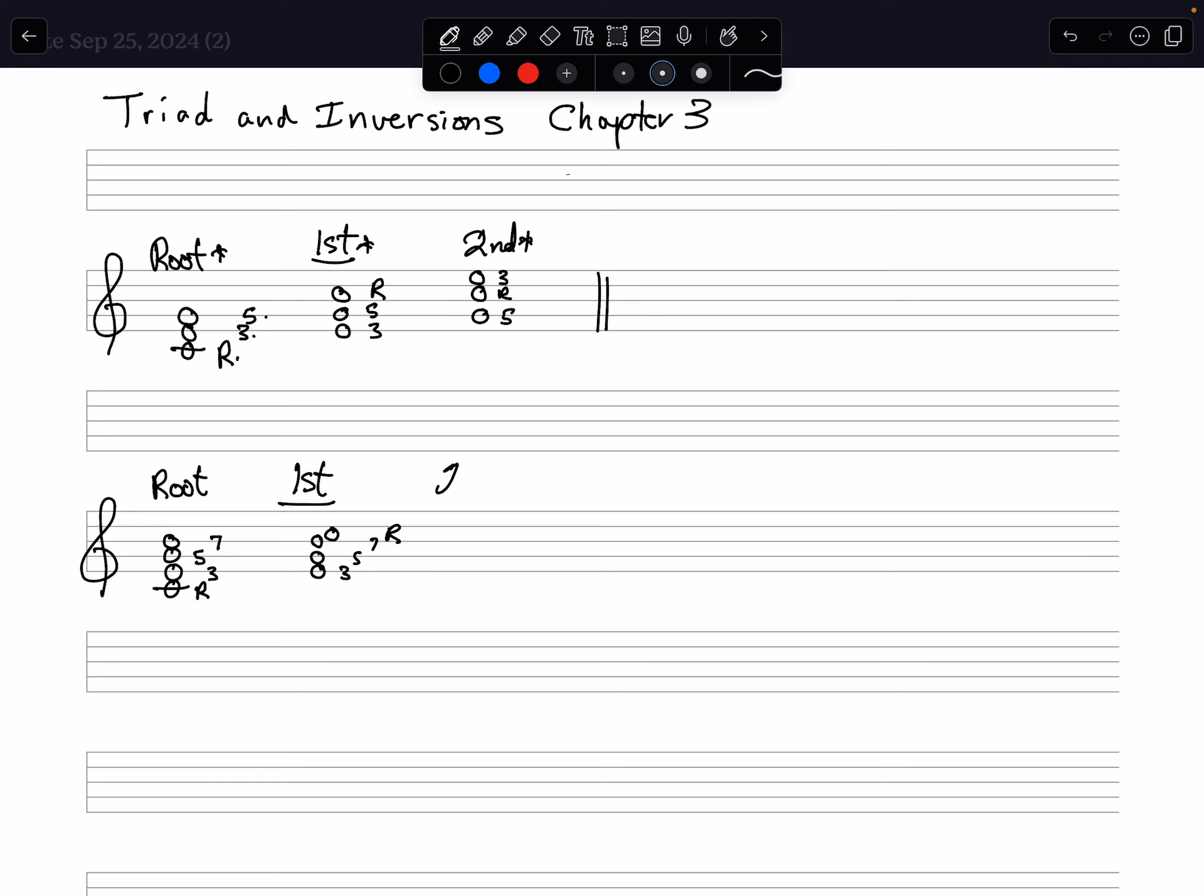Second inversion is going to be fifth, seventh, root, and third—second inversion. And then there is a third inversion because there's four notes, four possibilities: root, first inversion, second inversion.